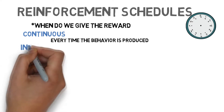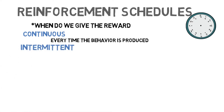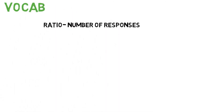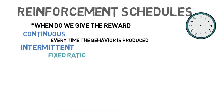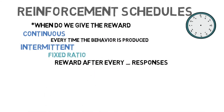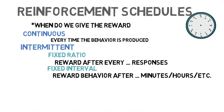Then you have a series of four intermittent schedules. This can be a bit confusing, so to help: ratio can be thought of as a number of responses, and interval as a period of time. Fixed is best thought of as 'every,' and variable can be best thought of as 'on average.' The fixed ratio schedule is when you reinforce the behavior after a specified number of responses — for example, for every five times the lever is pressed, it gets one pellet of food. There's also the fixed interval schedule, which is when the behavior is reinforced after a fixed period of time.